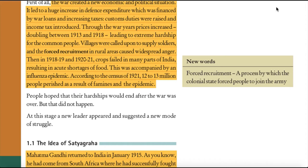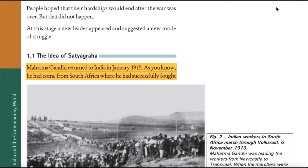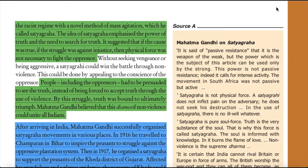People hoped that their hardships would end after the war was over, but that did not happen. At this stage, a new leader appeared and suggested a new mode of struggle. Mahatma Gandhi returned to India in January 1915. He had come from South Africa, where he had successfully fought the racist regime with a novel method of mass agitation, which he called Satyagraha.